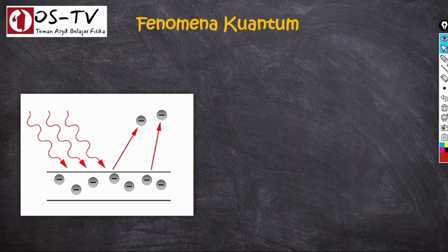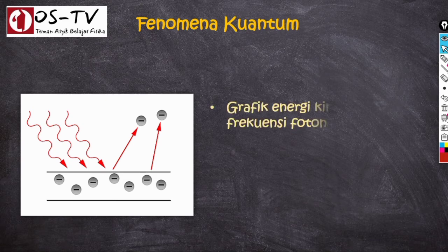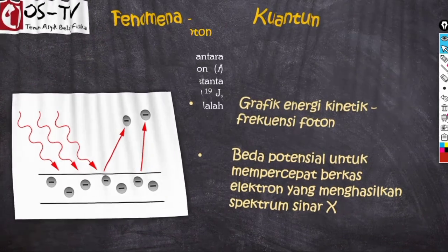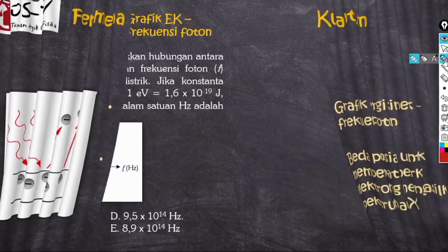Sekarang kita lanjutkan pada model soal yang sering keluar dalam UTBK atau SBMPTN pada pokok bahasan fenomena kuantum. Beberapa model soal yang sering keluar di antaranya terkait grafik energi kinetik dengan frekuensi foton, serta beda potensial untuk mempercepat berkas elektron. Kita mulai dari contoh soal nomor 1.